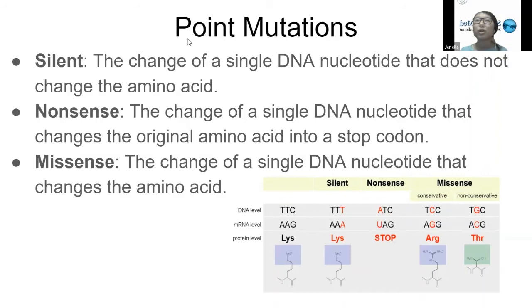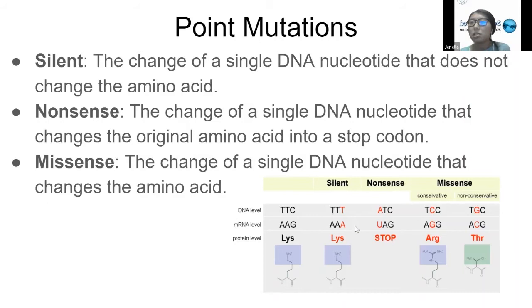One factor is mutations — broadly mutations, but this slide is particularly about point mutations. Silent mutations are the change of a single DNA nucleotide that does not change the amino acid. In the example, the first column shows the original amino acid, and in the silent mutation, although we change this C to a T, it still produces lysine. So it's silent in that it's not really changing that amino acid.